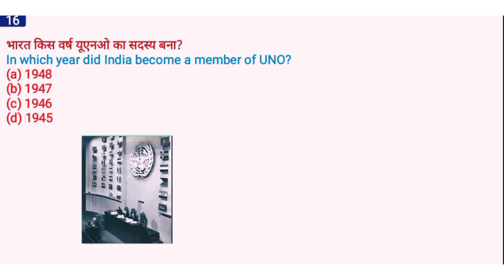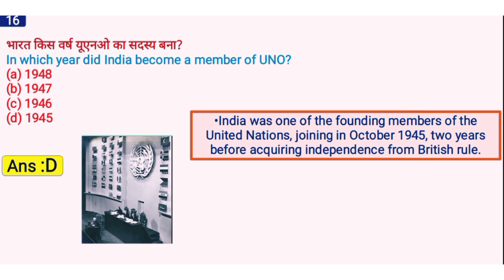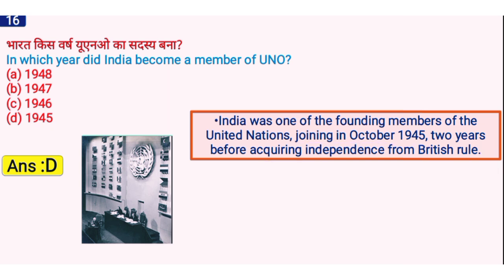In which year did India become a part of the United Nations Organization? The right answer is option D, 1945. India was one of the founding members of the United Nations, joining in October 1945 — two years before acquiring independence from British rule in 1947.